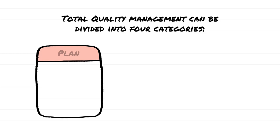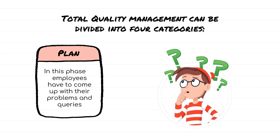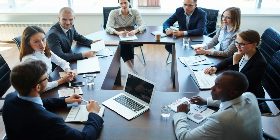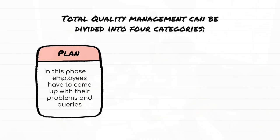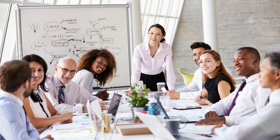Planning is the most crucial phase of Total Quality Management. In this phase, employers have to come up with their problems and queries which need to be addressed. They need to identify the various challenges they face in their day-to-day operations and analyze the problems from the root. Employees are required to do necessary research and collect relevant data which would help them find solutions to all their problems.